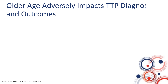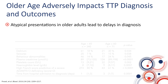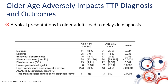Older age adversely impacts the diagnosis as well as the outcomes of TTP, because older adults may present somewhat atypically. For example, in the study from the French registry, where 71 of 340 patients — about 20% — were older than 60 years of age, they had a much higher rate of neurologic symptoms such as delirium, seizures, and behavioral abnormalities.